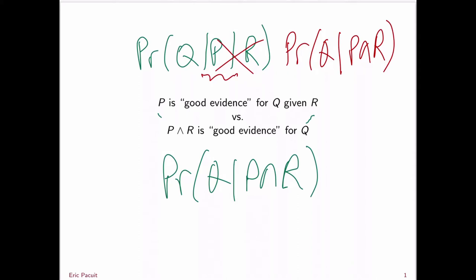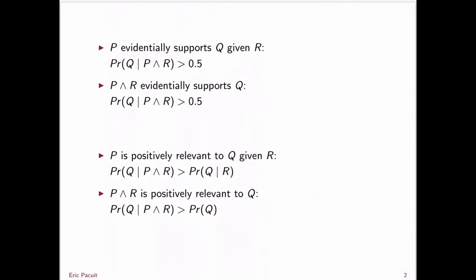However, this is going to depend on what exactly we mean by good evidence. If by good evidence we're talking about evidential support, then the two ways of phrasing it turn out to say the same thing. P evidentially supports Q given R just means the probability of Q given P and R is greater than 0.5 — but that's just to say that P and R evidentially supports Q.